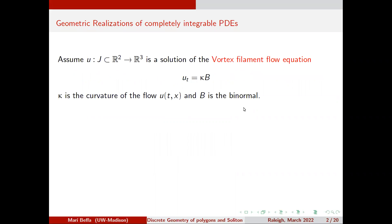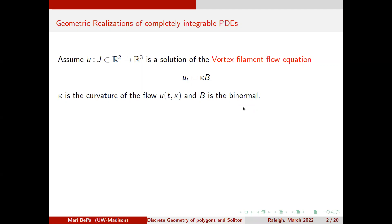I assume I have a bunch of curves — a flow of curves evolving with time in Euclidean R3. This equation is called the Vortex Filament Equation: U_T = κB, where B is the binormal. The tangent vector, normal vector, and binormal form a Frenet frame. The flow moves the curve out of the osculating plane, going faster when curvature is larger — so a small ring goes very fast.